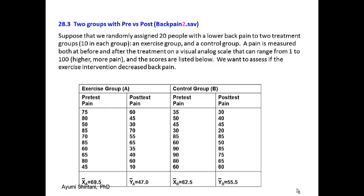The example we have today is from a back pain study. Suppose that we randomly assign 20 people with lower back pain to two treatment groups — 10 patients in each group: an exercise group and a control group. Pain is measured both before and after the treatment. Before is the baseline and after is the end of the study time, measured on the visual analog scale ranging from 1 to 100, where a higher score indicates more pain.